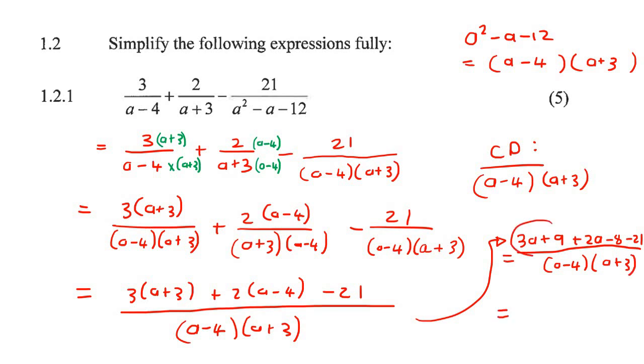Now we can just put like terms together. So for example, this 3a and this 2a can become 5a. And then this plus 9 minus 8 is 1. And then 1 minus 21 is minus 20. And then a minus 4 and a plus 3.